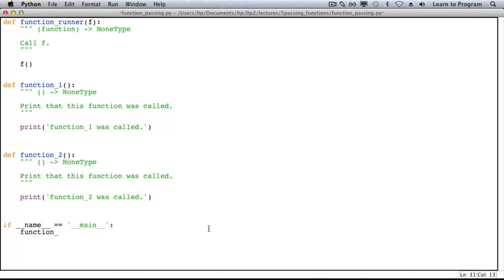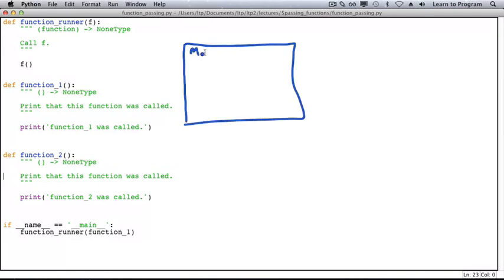Here, we call functionrunner, supplying function 1 as the argument. Now we'll trace execution of this program. When the program starts running, we get a frame for the module.